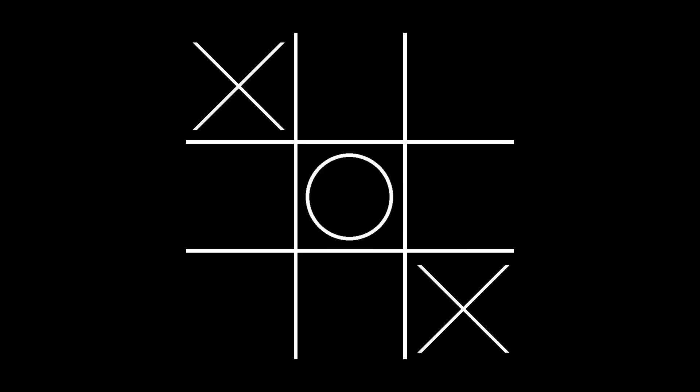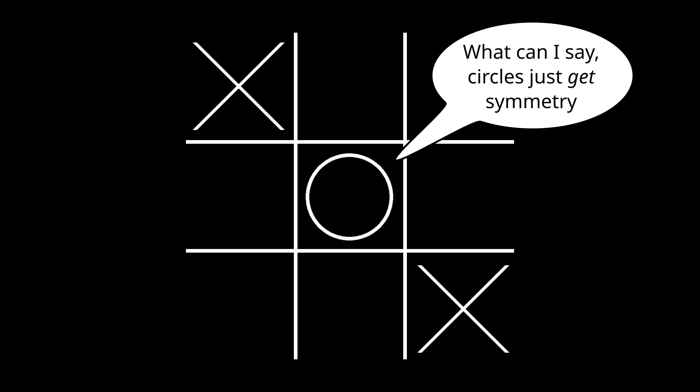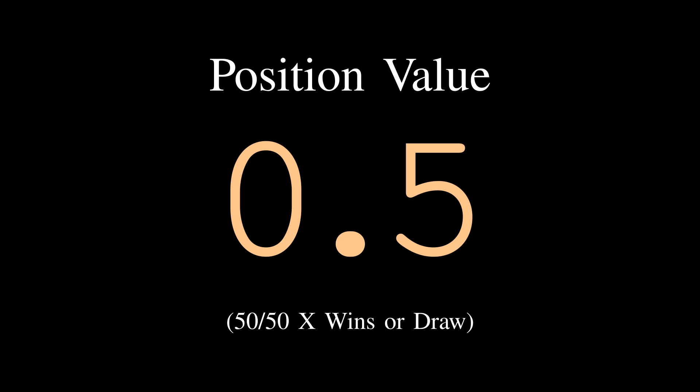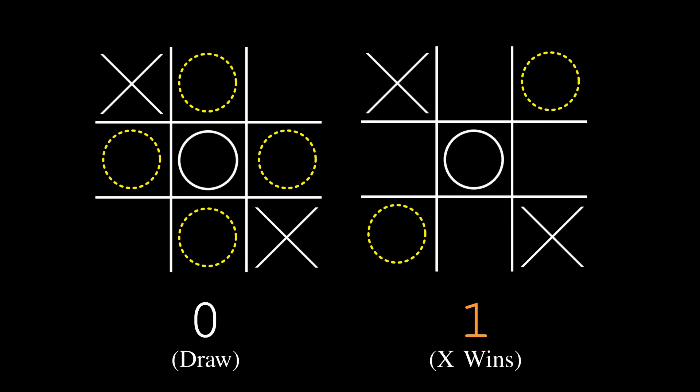On the other hand, if O is skilled enough to recognize the underlying symmetry but doesn't think strategically beyond that, the expected value is positive 1/2, since they're selecting between two possibilities: edge or corner, one of which is a draw and the other of which is a victory for X.